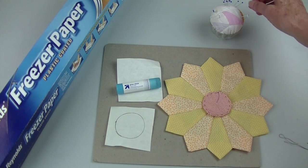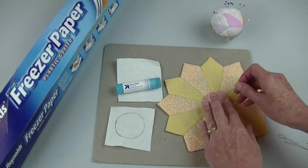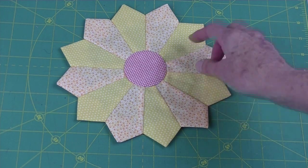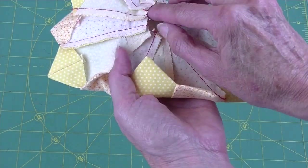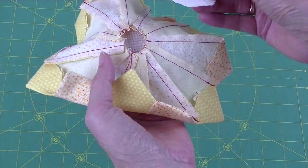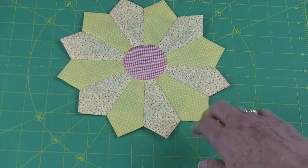Center your circle and pin in place. I used matching thread to appliqué my circle. Then I removed the basting stitches. You turn it over and reach in. Loosen up that paper. You can just pull it right out. Now this flower is ready to be appliquéd in place.